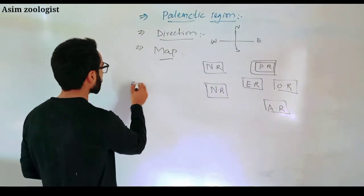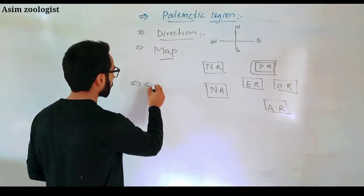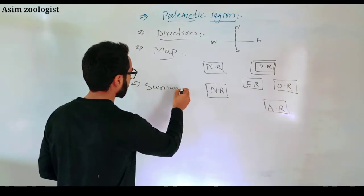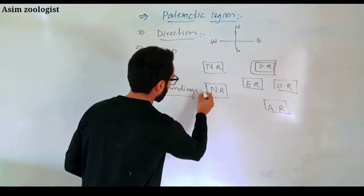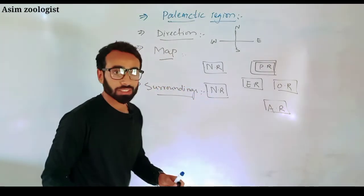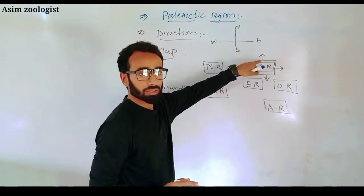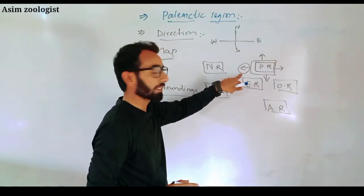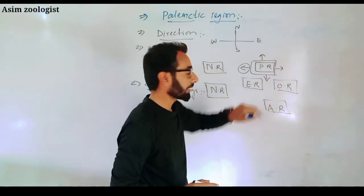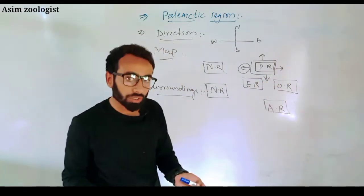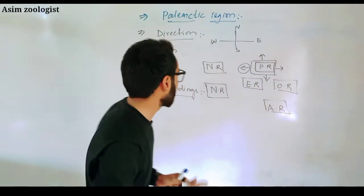The third step is surroundings. You have to discuss the surroundings of that particular region — for example, the north side is sea, this side is also sea, and here mountains or deserts are present. So you have to mention the surroundings just like that.